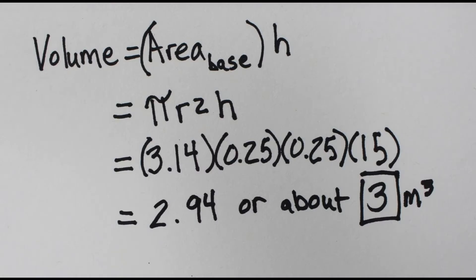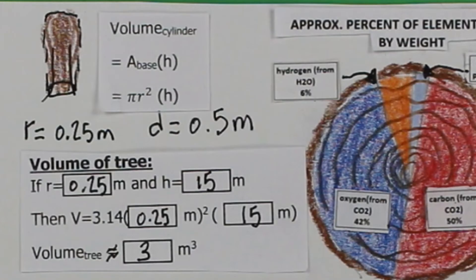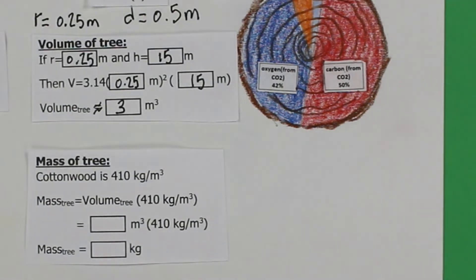To find the volume of that tree cylinder, we multiply the area of the base times the height. So our very rough estimate for the volume is about 3 cubic meters. Cottonwood has about 410 kilograms of mass per cubic meter. So 3 cubic meters of cottonwood tree has a mass of 1,230 kilograms.